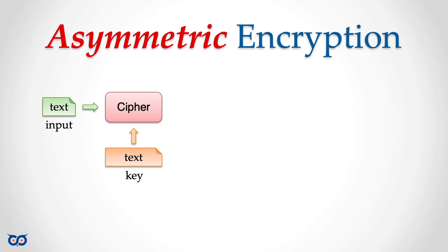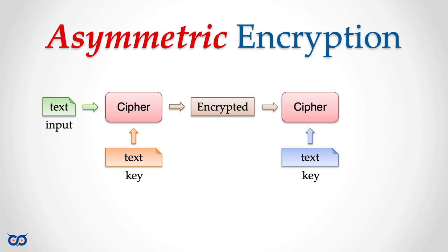With asymmetric encryption, we have some text, give it to a cipher with a key, and get encrypted text. But when we want to decrypt, we give the cipher a different key — notice the key is different. We can still recover the output. Don't worry about how this works mathematically; the important thing is to grasp the concept.